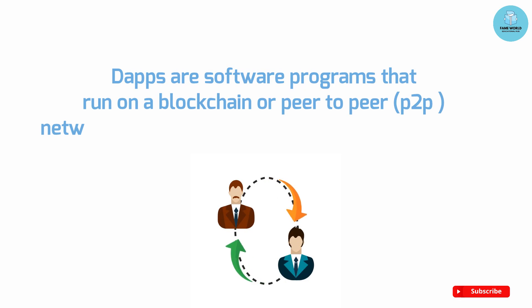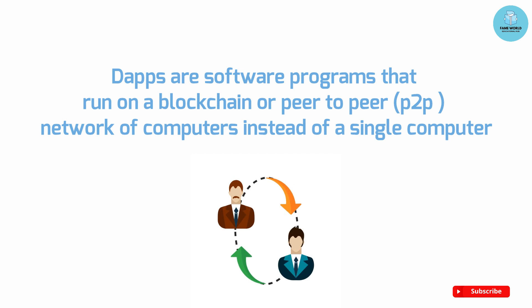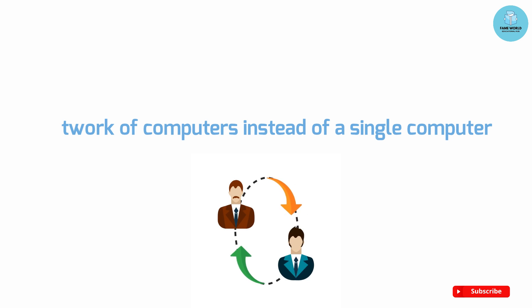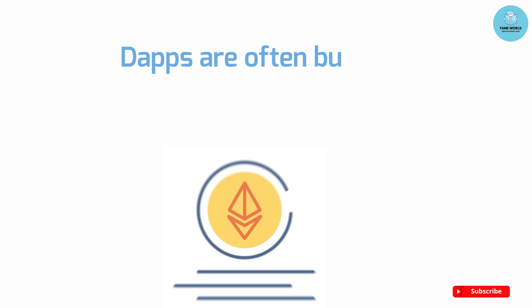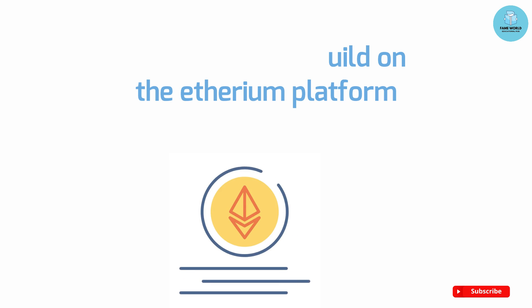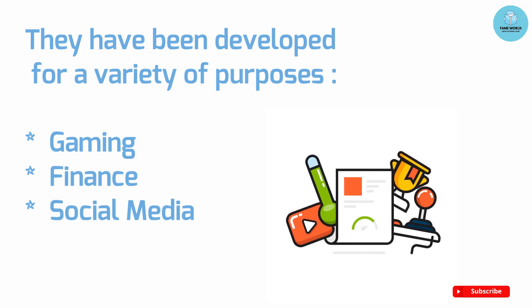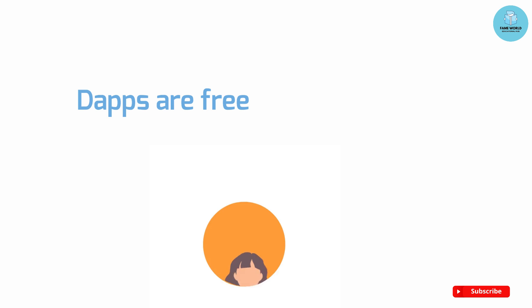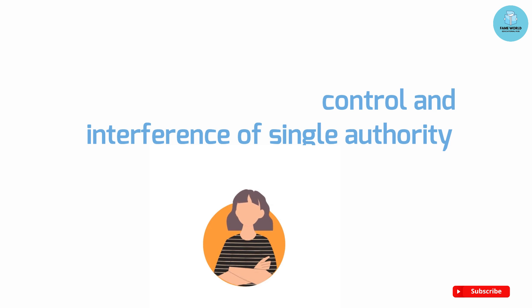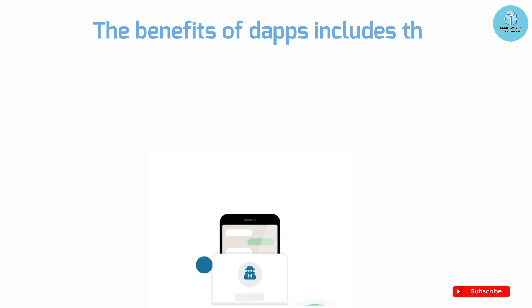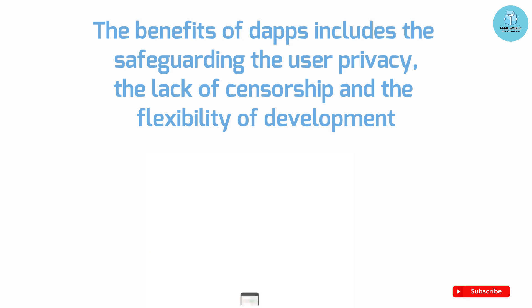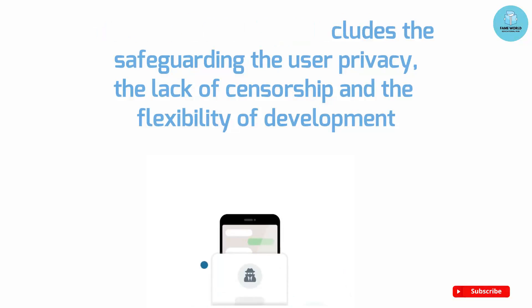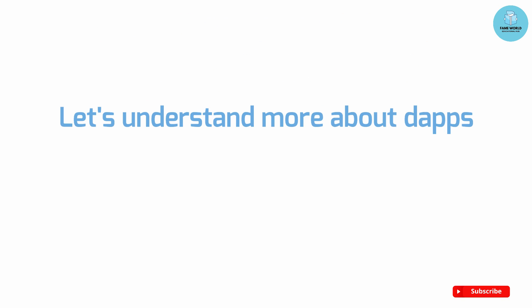Decentralized applications or dApps are software programs that run on a blockchain or peer-to-peer, i.e. P2P, network of computers instead of a single computer. dApps are often built on the Ethereum platform and have been developed for a variety of purposes including gaming, finance, and social media. dApps are free from the control and interference of a single authority. The benefits of dApps include the safeguarding of user privacy, the lack of censorship, and the flexibility of development.